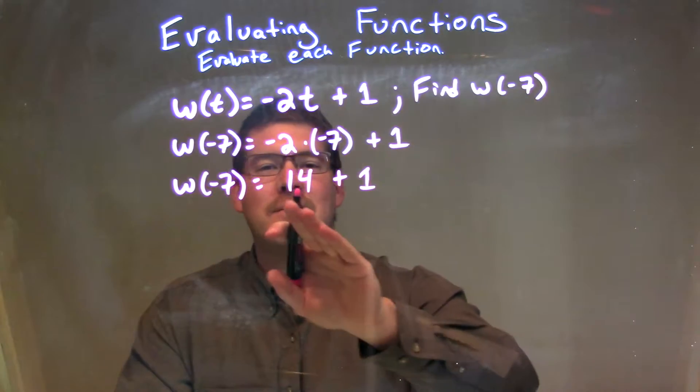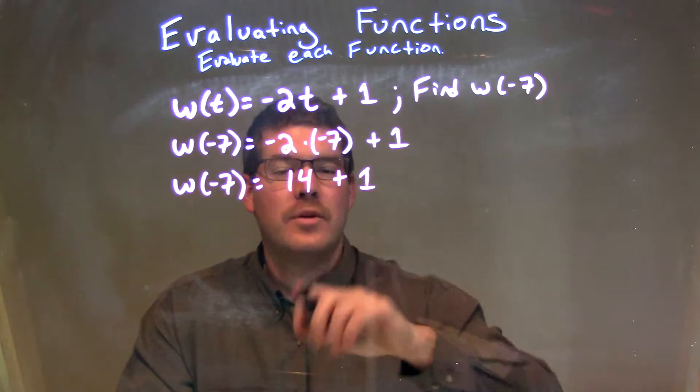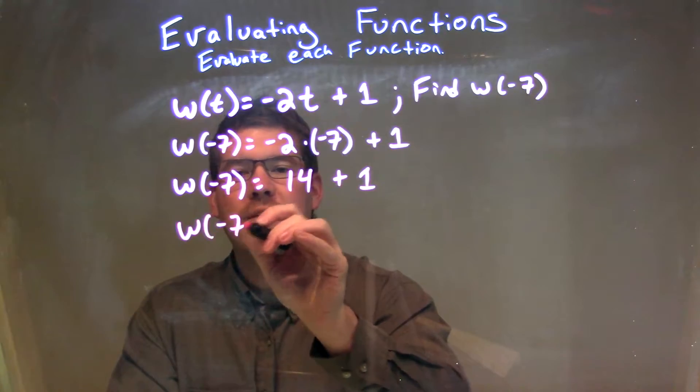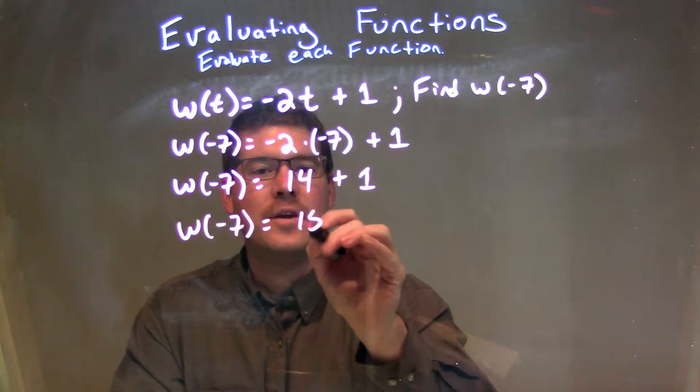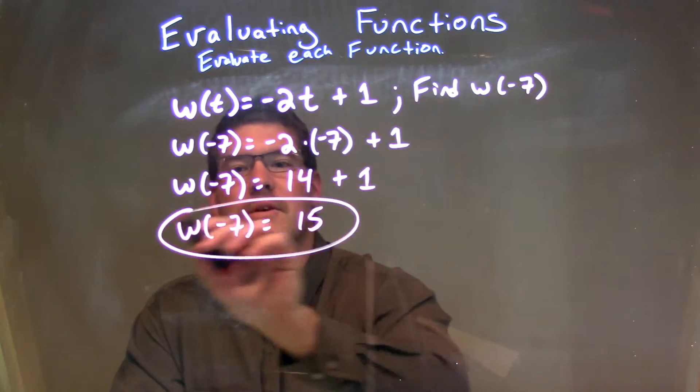w of negative 7 equals 14 plus 1. 14 plus 1 is 15, so w of negative 7 is equal to 15. That's it. My final answer.